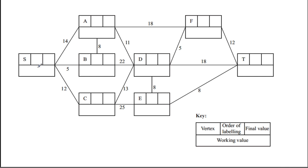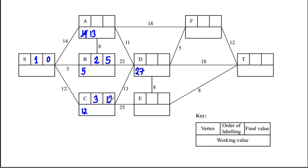First, we label S with 0 — it's zero distance from the starting point. Branching out from S: you can reach A in 14, B in 5, and C in 12. Looking at all temporary labels, the shortest is B, so we permanently label it second with value 5. Branching from B: 5 + 8 = 13, which is better than 14, so A gets 13. Also 5 + 22 = 27. Looking at temporary labels, the smallest is C at 12 — permanently label it third.